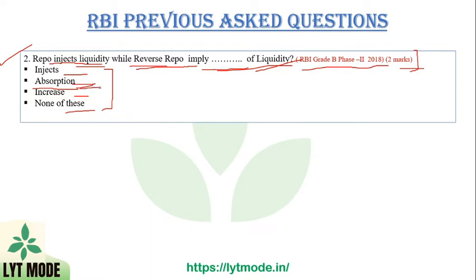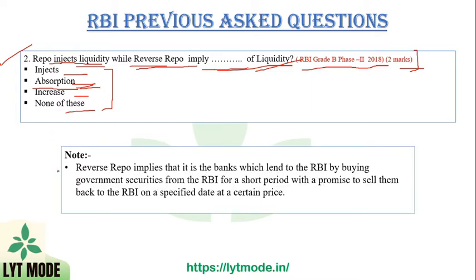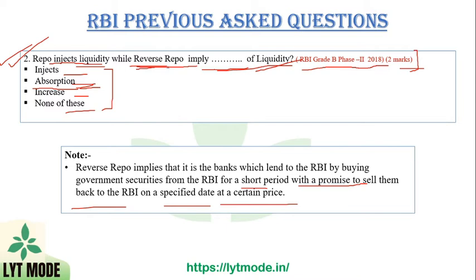Reverse repo absorbs liquidity from the economy and markets. It works when banks lend to the RBI by buying government securities from the RBI for a short period, with a promise to sell them back at a specific date and price with interest. The current repo rate is 4% and the current reverse repo rate is 3.35%.